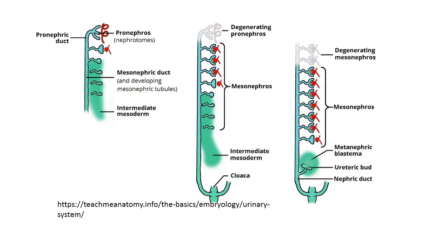On this slide you can see the first stage — pronephros — the second stage — mesonephros — and the permanent kidney, or metanephros.